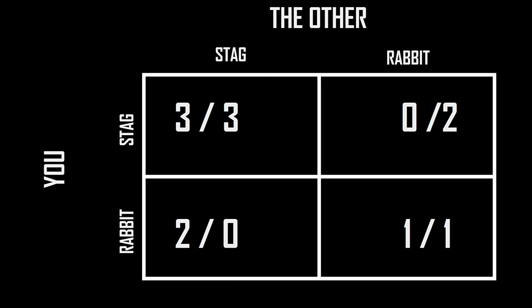However, there are actually two Nash Equilibria here. When both of you are going for rabbits, changing your strategy and going for the stag alone is not going to do you any good — you would go from getting one day's worth of food to getting nothing. The ideal outcome would be to communicate with the other hunter and hunt the stag together, but in this scenario both parties are acting independently. So the rabbit-rabbit scenario is also a Nash Equilibrium.